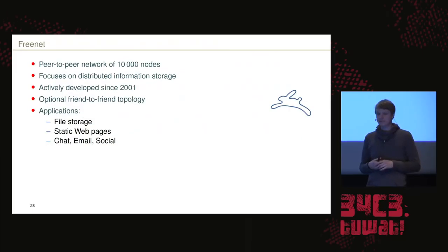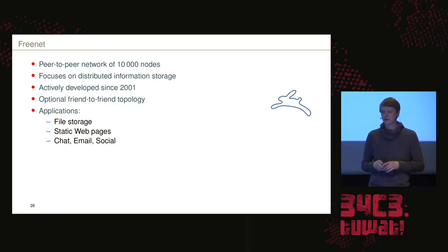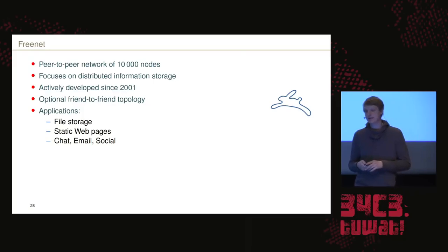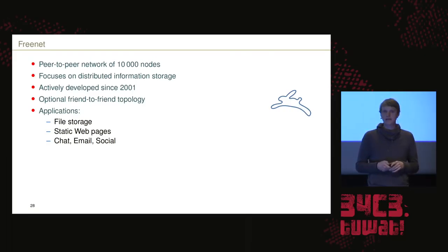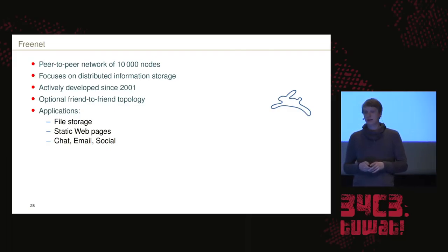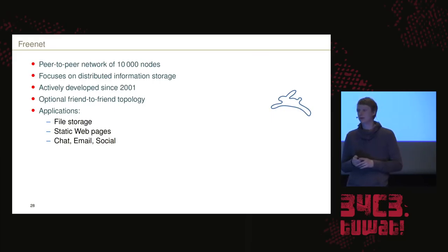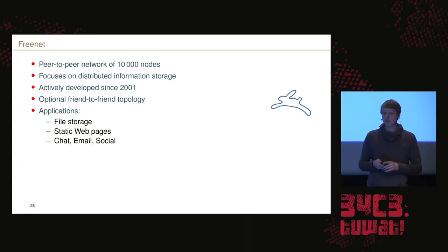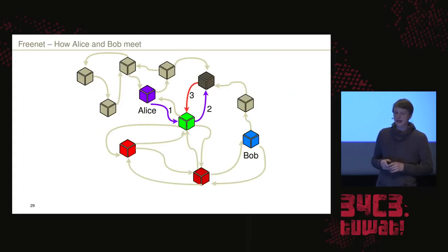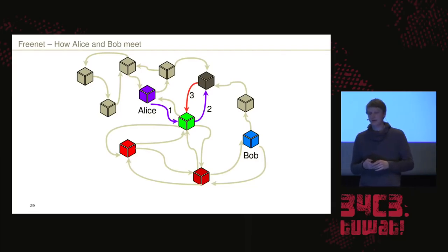Let's have a look at Freenet. Freenet is also a peer-to-peer network; it's smaller, with around 10,000 nodes, and it focuses on distributed information storage. It has been actively developed since 2001. There is also an optional friend-to-friend topology — you can decide whether you only trust your friends, acting like a whitelist of which peers you want to connect to. Typical Freenet applications are file storage, static web pages, chat, and email. There are no tunnels, and there's no onion encryption involved in Freenet.